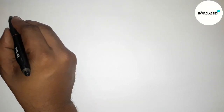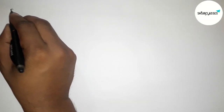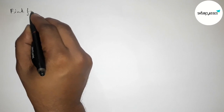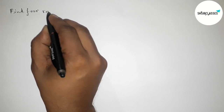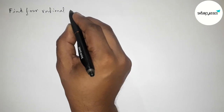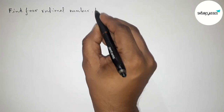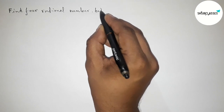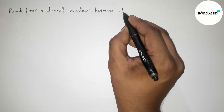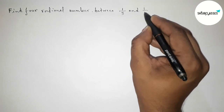Hi everyone, welcome to SI Share Classes. Today in this video we have to find 4 rational numbers between 1 by 5 and 1 by 3 in an easy way. So please watch the video till the end. Let's start.